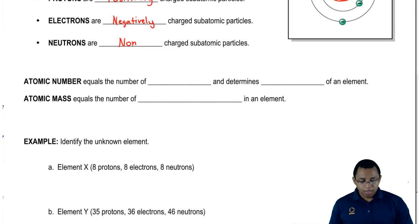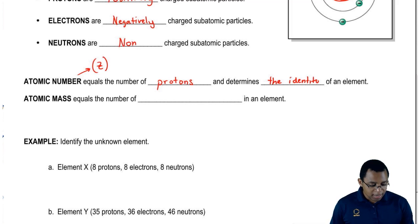The atomic number uses the variable Z and equals the number of protons. The atomic number tells us the number of protons and determines the identity of an element. If you know the number of protons, then you know the element we're talking about because each element has a specific number of protons. The atomic number is like the fingerprint for that element.